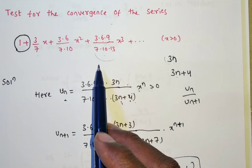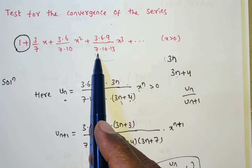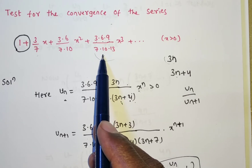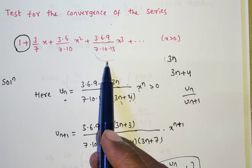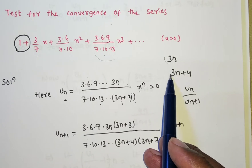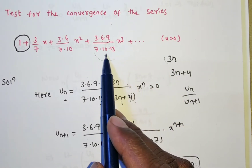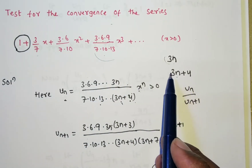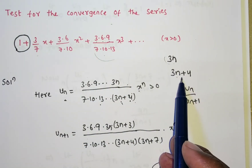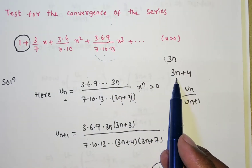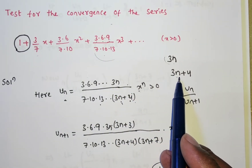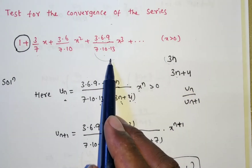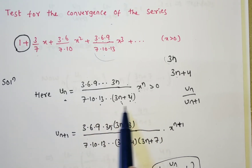For the denominator, the terms are 7, 10, 13 with common difference 3. So write 3n, but the first term here is 7, not 3. So add 4 to get 3n+4. Verify: n=2 gives 6+4=10, n=3 gives 9+4=13. Satisfied. So this is our nth term: the numerator is the product up to 3n, denominator is the product up to (3n+4), multiplied by x^n.